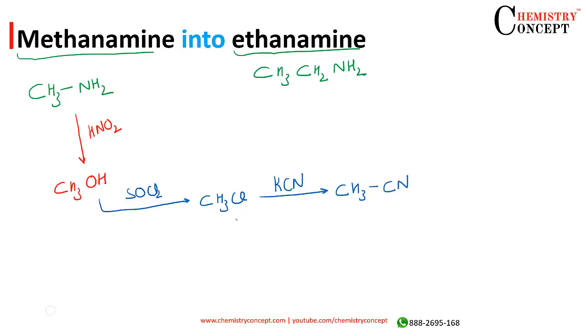And then reduction of this cyanide will give us ethanamine. This carbon will get 2 hydrogen, the nitrogen will get 2 hydrogen. And this is how the conversion can be done in 4 steps. That's it.